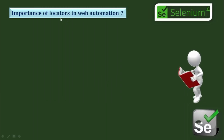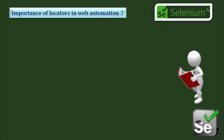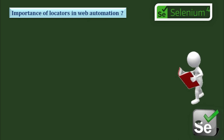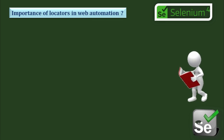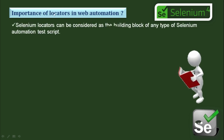Now let's understand the importance of locators in web automation. We should know the role of locators in web automation. For web automation you can use any tool — Selenium, BDD, Cucumber, Cypress, Playwright — any web automation tool to automate your applications, and you can use any programming language like Java, Python, or Ruby. But the locator strategy will be the same.